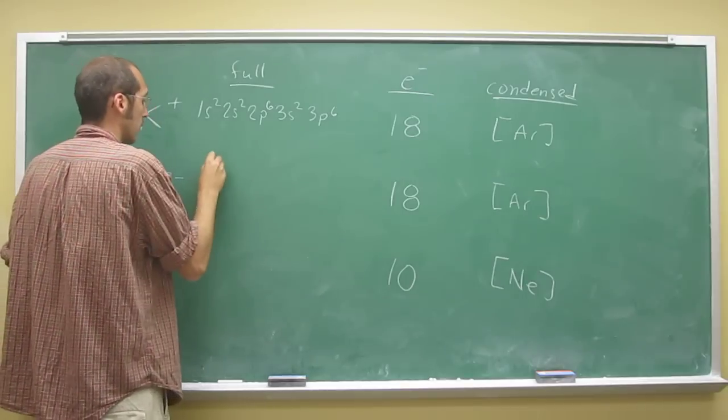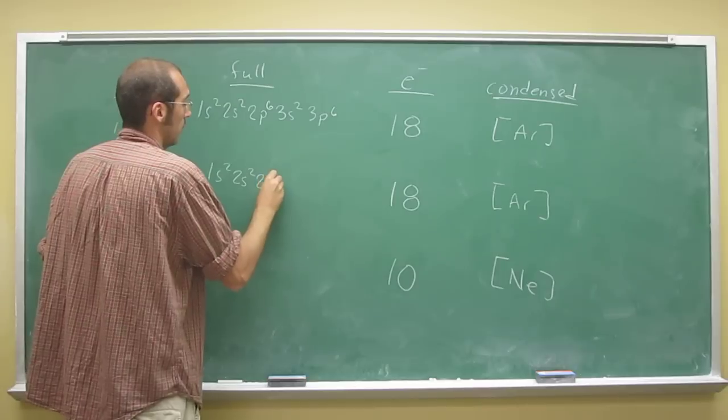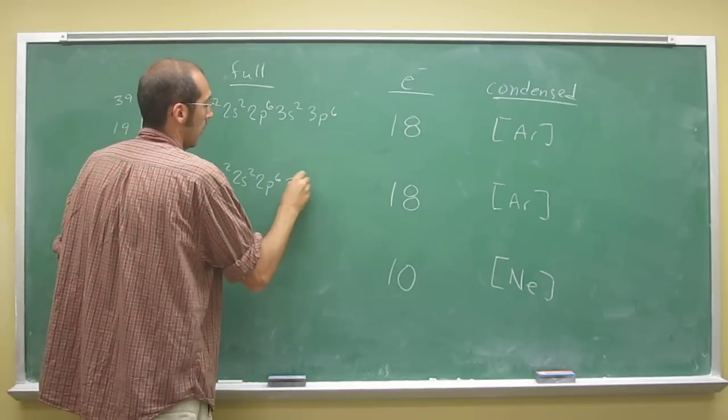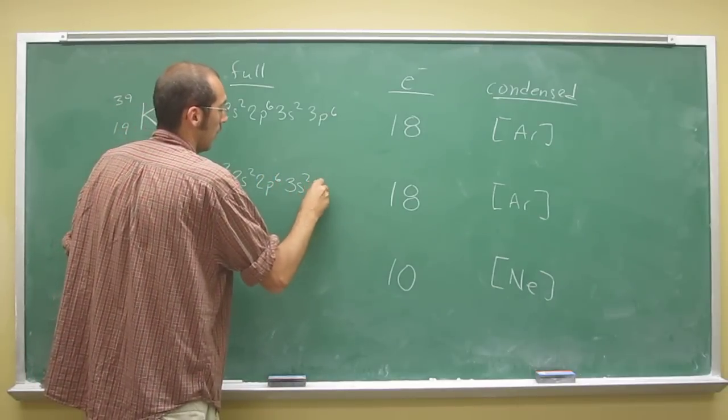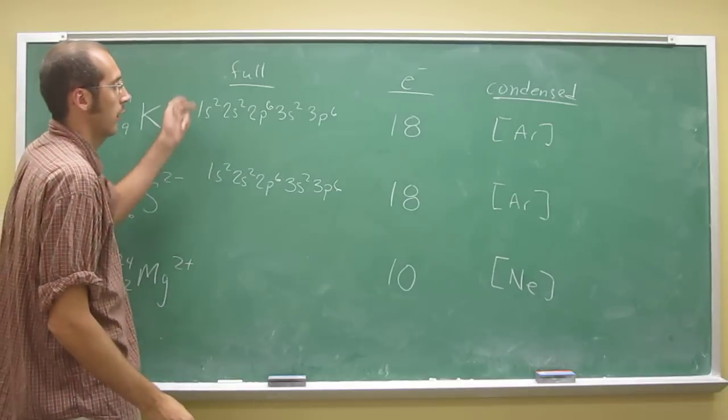Same thing here: 1s2, 2s2, 2p6, 3s2, 3p6. So these are isoelectronic with each other.